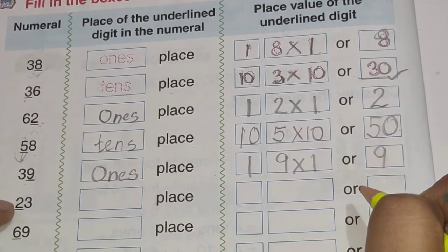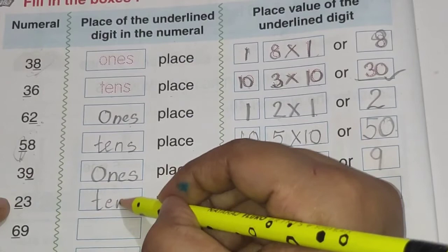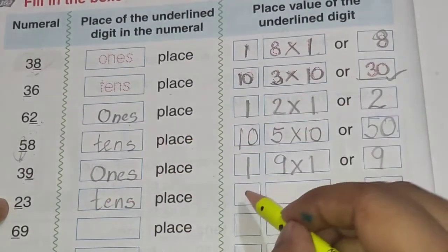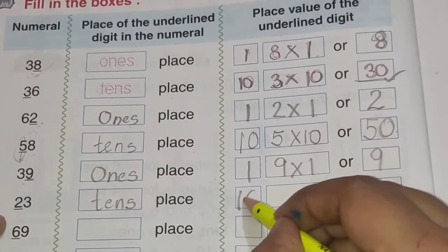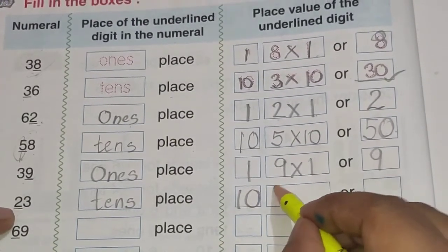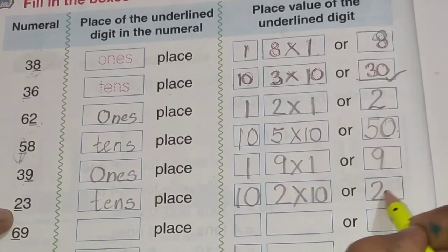Now this is 23. 2 is underlined. And yeh kaunsi place pe hai? Tens place pe. T, E, N is tens place. Tens place pe hai. So tens place ki value hoti hai 10. Now the number is 2 into 10. 2 tens are 20.